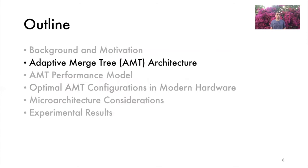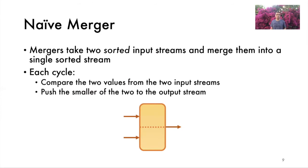First, let's see how mergers and merge trees work. Hardware mergers merge two sorted input arrays. For example, the merger in the figure will merge the sorted arrays 1357 and 2468. It reads the top values from its two input streams, compares them, and outputs the smaller value. And this process repeats on every cycle.